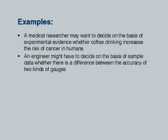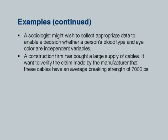Here are some quick examples. A medical researcher may want to decide on the basis of experimental evidence whether coffee drinking increases the risk of cancer in humans. If there are two kinds of measurement gauges in the market, an engineer may have to decide on the basis of sample data whether there is any difference between the accuracy of the two. This is the type of question asked in hypothesis testing.